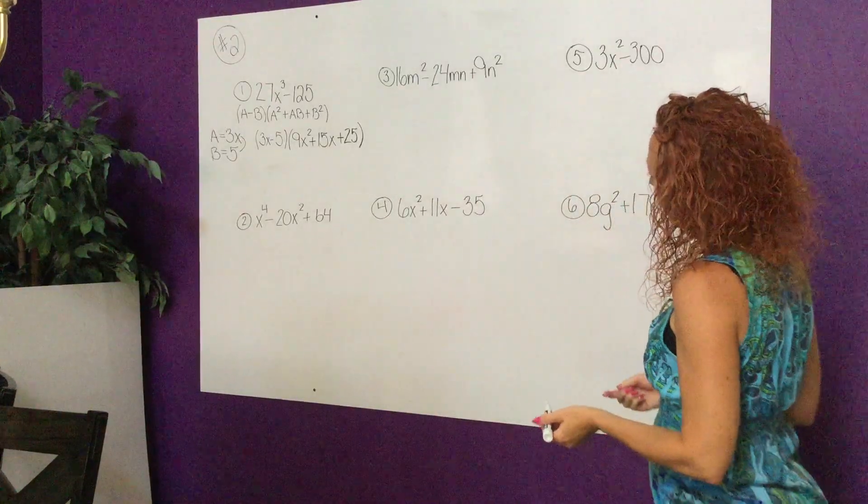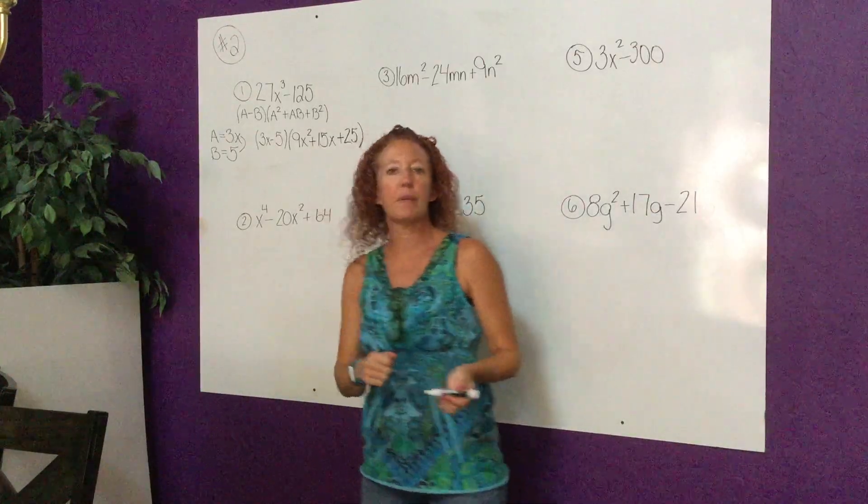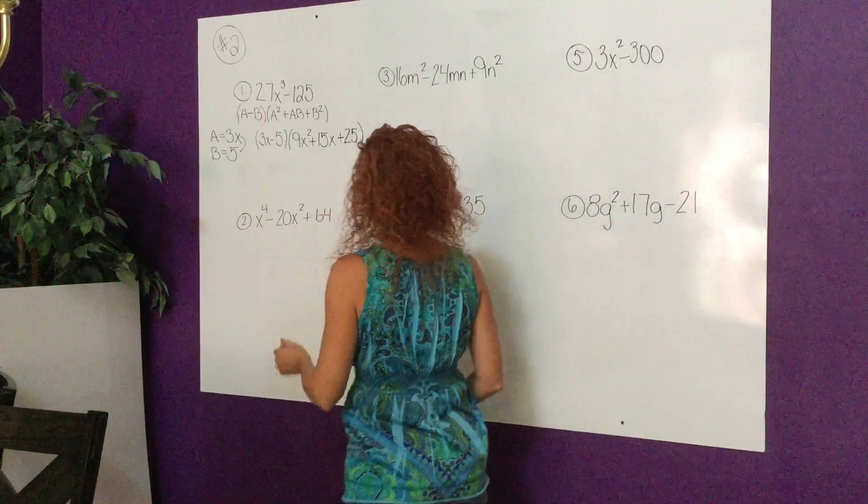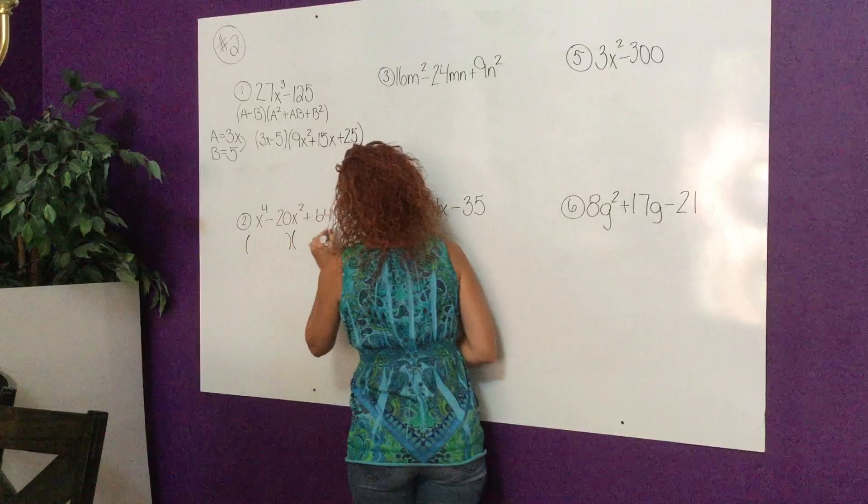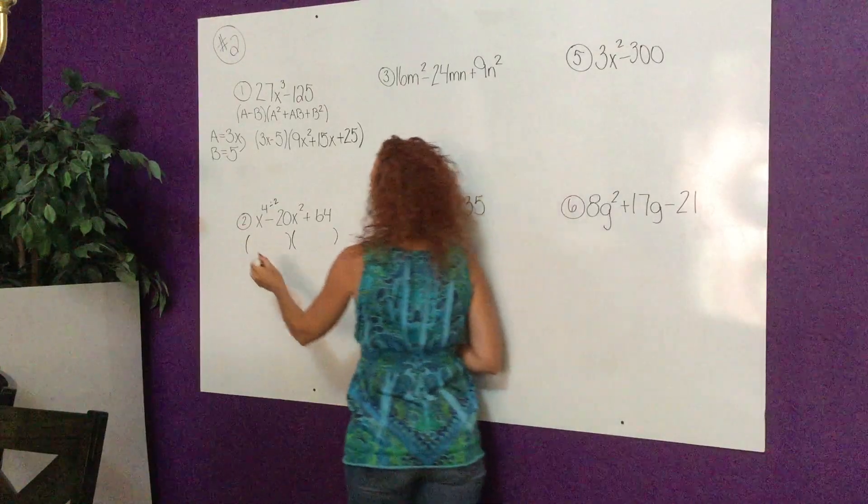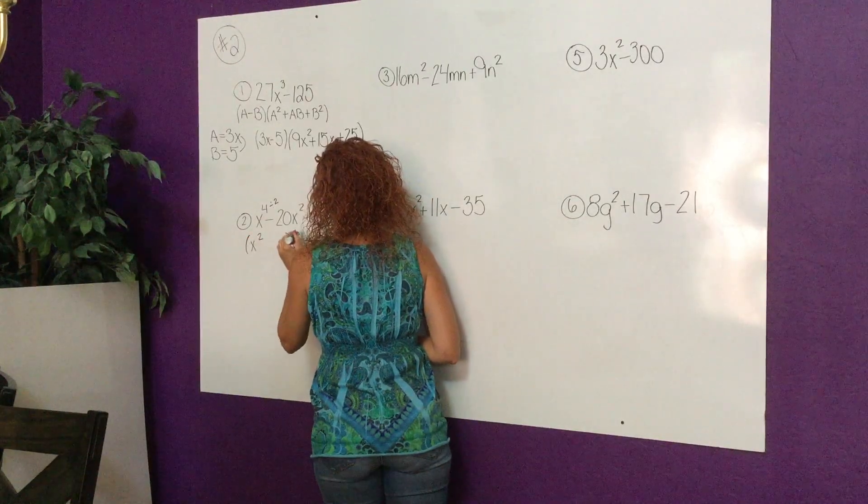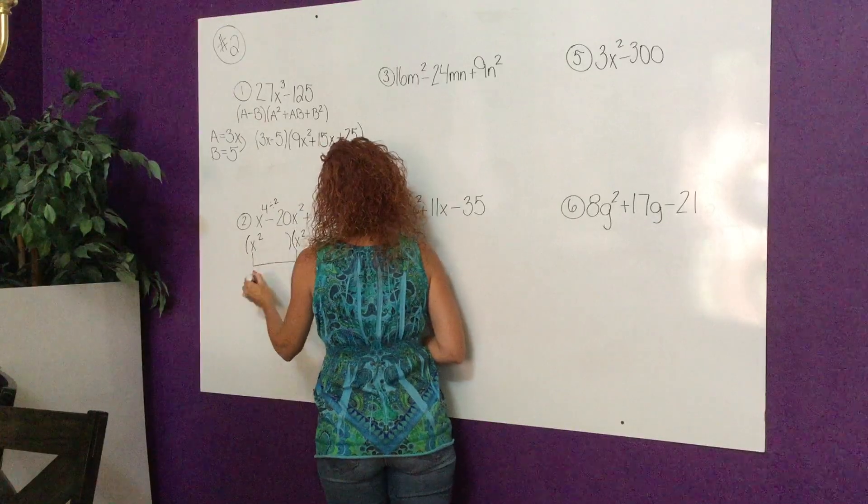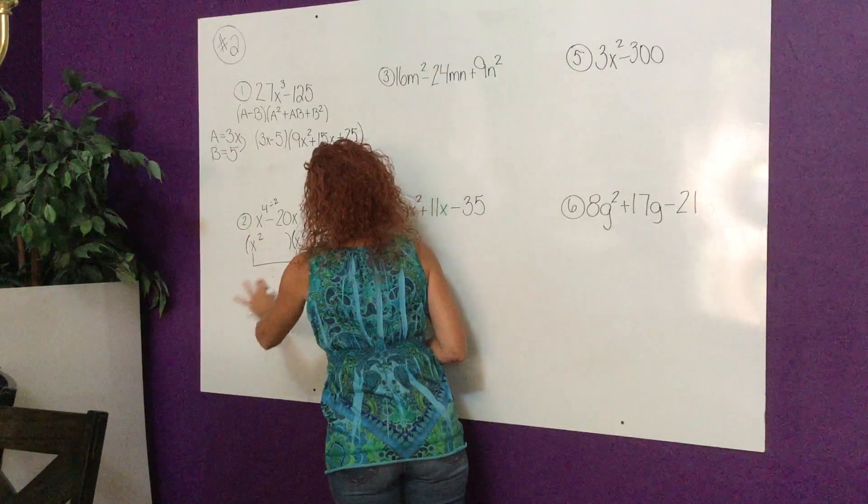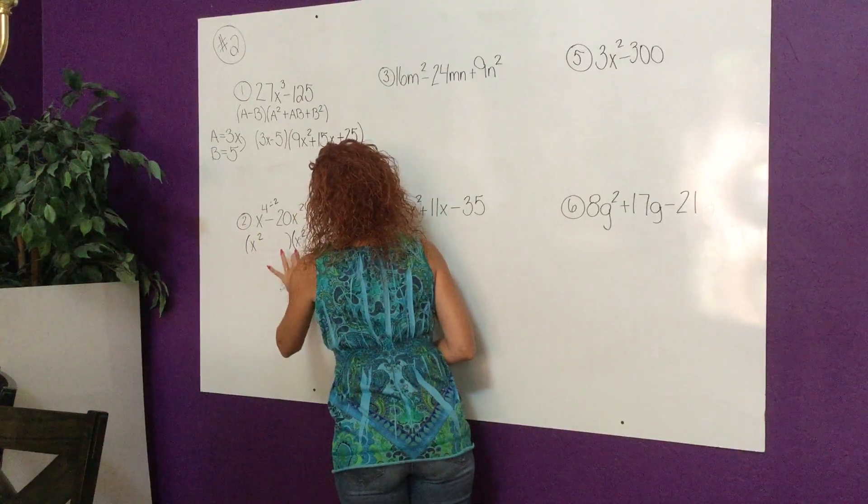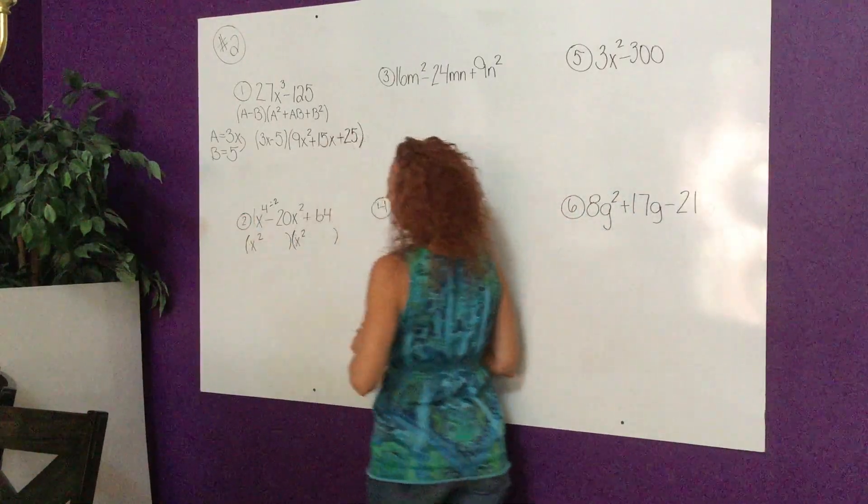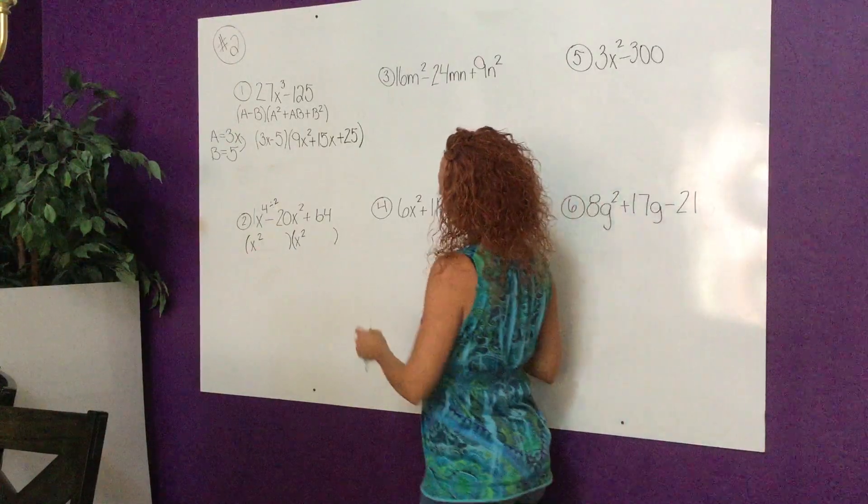Number two. I see that this is x to the fourth. It doesn't happen that often that would be a higher power, but it happens occasionally. Remember we touched on this one other time where I said you're just going to divide that by 2, so this is going to be x² and x², because when I go back to foil it I would come up with that x to the fourth. You always just divide that by 2.